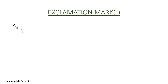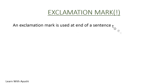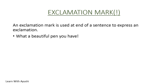Exclamation mark. An exclamation mark is used at the end of a sentence to express an exclamation. For example: 'What a beautiful pen you have!' and 'Alas, we have lost the match!' Don't confuse interrogative sentences with exclamatory sentences. Interrogative sentences ask a question, while exclamatory sentences express feelings such as happiness, sadness, or sorrow. We put an exclamation mark after exclamatory sentences.